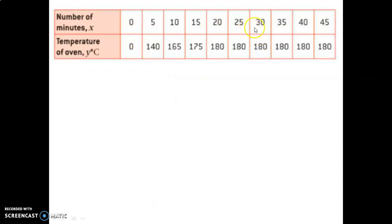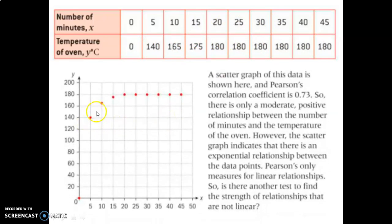Here's some more data: number of minutes and the temperature of an oven. Let's say you set an oven to 180 degrees — first the temperature goes up and then it plateaus at 180, because it was set to a maximum of 180. That data, when plotted, shows a strong relationship, but this one's not linear. So the Pearson correlation coefficient is 0.73, because the Pearson coefficient is for linear data — it shows like it's not strong, but it actually is.